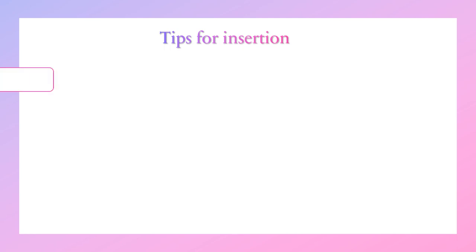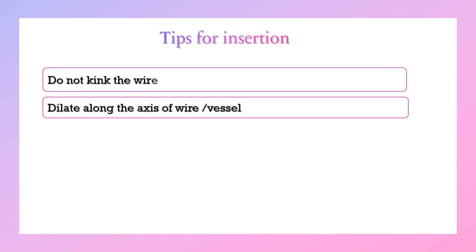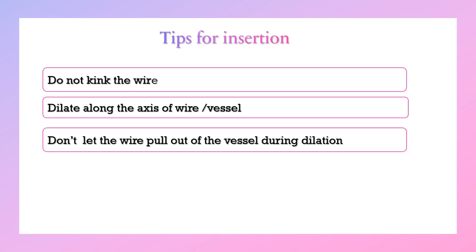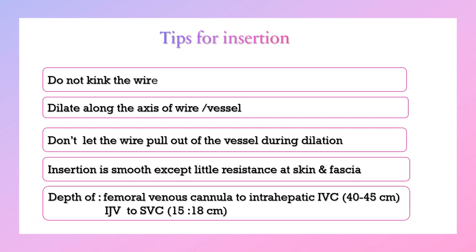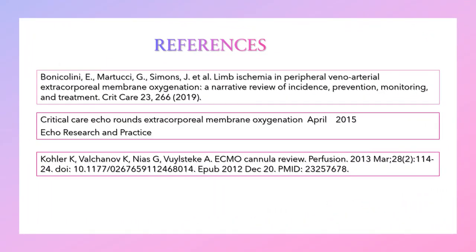Steps of insertion for percutaneous cannula: do not kink the wire; dilate along the axis of the wire and the vessel — the wire, vessel, and dilator should all be in the same line. Keep the wire external to the vessel during dilation, maintaining a fixed external length throughout the process. Dilatation should be smooth except for resistance at the skin and fascia. A two-person technique can be used, where one dilates and the other manages the up-and-down movement of the wire. The depth of the femoral venous cannula to the inferior vena cava is 14 to 45 cm, and from the internal jugular to the superior vena cava is 15 to 18 cm. Insertion should be ultrasound-guided.